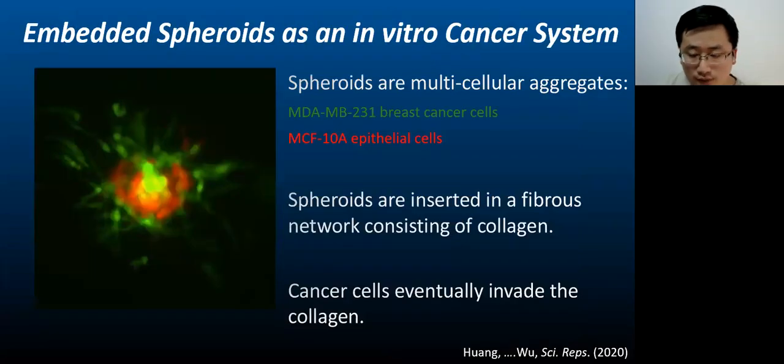We are focusing on a unique in vitro cancer model, known as embedded spheroids. These spheroids are clusters of multiple cells, and they represent a complex and dynamic system, closely mimicking the physiological conditions of a tumor. They are embedded within a 3D network made up of collagen, a key component of the extracellular matrix.